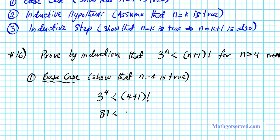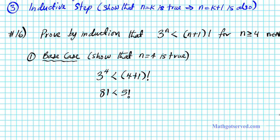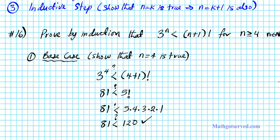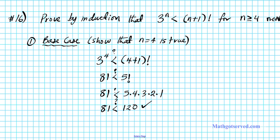Is 81 less than 5 factorial? We put a question mark because we don't know if this is true or false. So is 81 less than 5 times 4 times 3 times 2 times 1? 5 times 4 is 20, 20 times 6 is 120, times 1 is 120. So is 81 less than 120? Absolutely. So our foundation is true — the base case is accurate, and we have permission to move on to the next step.